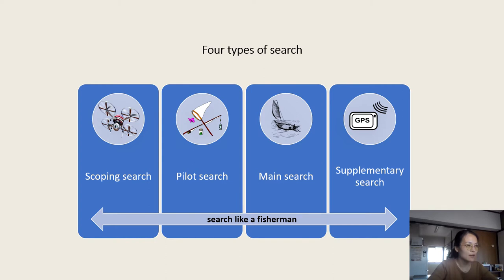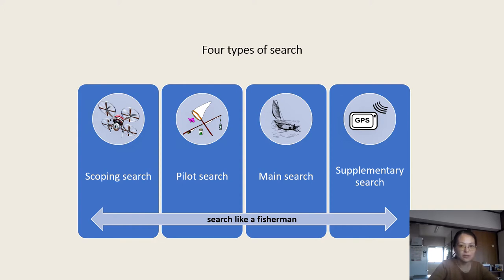I describe search like a fisherman. Imagine you send out a drone to chart the water to see what's there. Then you go out with your fishing kit to test if your tools are sturdy enough. After checking the water and your tools, you send out the boat and sail to fish. When you have your bulk of fish, you check for the best type, attach a GPS to them, and put them back in the water to find a bigger group of good fish. That's similar to searching for relevant literature in your research.